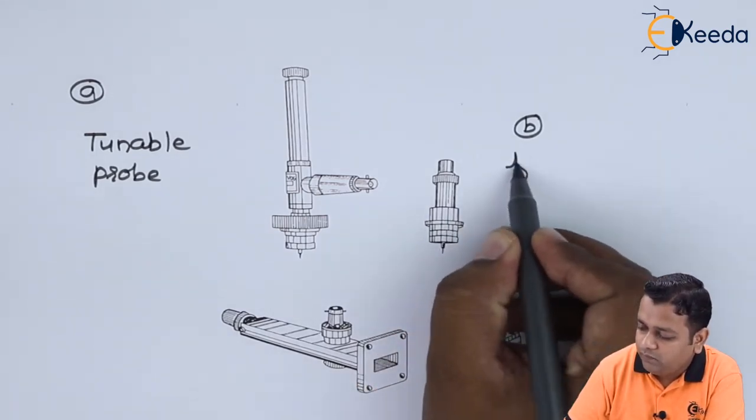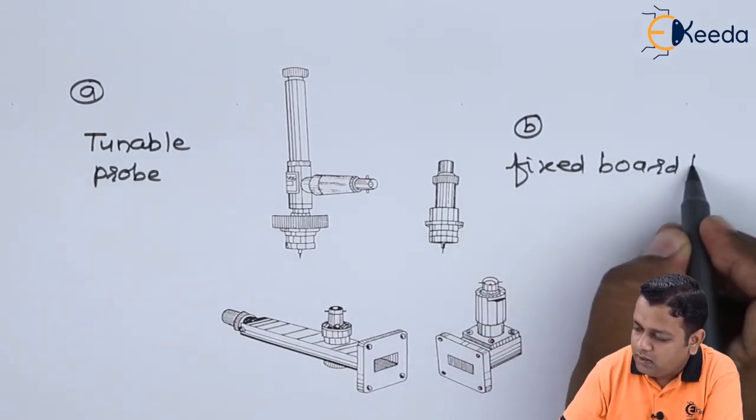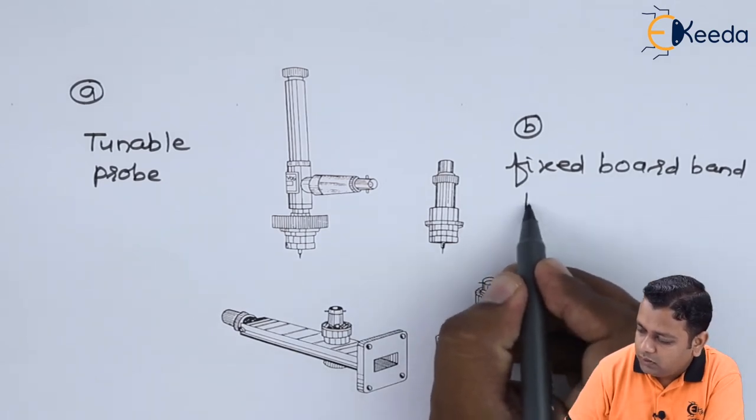The schematic diagram that we have shown in the previous lecture. Now we have part B of this figure to show this component which is called as fixed broadband tunable probe.